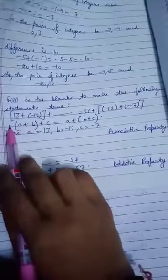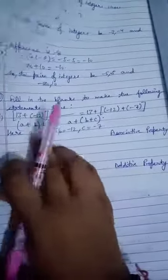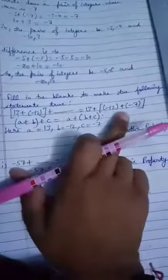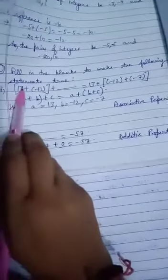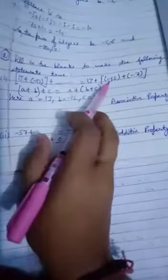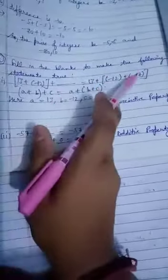Next is fill in the blanks to make the following statements. Now you have to fill this blank to make the left hand side and right hand side equal. So we have to solve this type of sums by using properties. Now here is 13 and here is also 13 plus minus 12, minus 12. This is blank and here is minus 7.